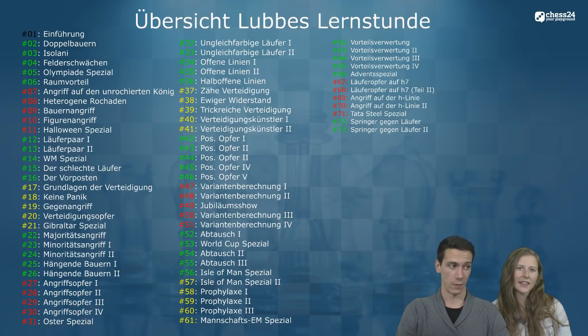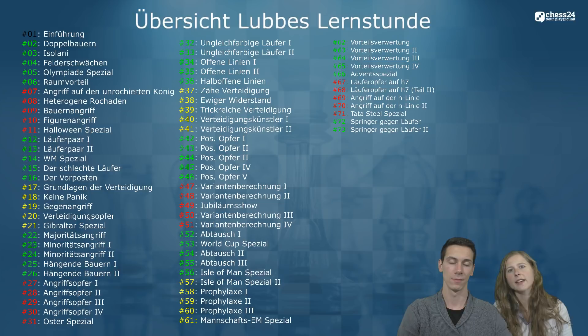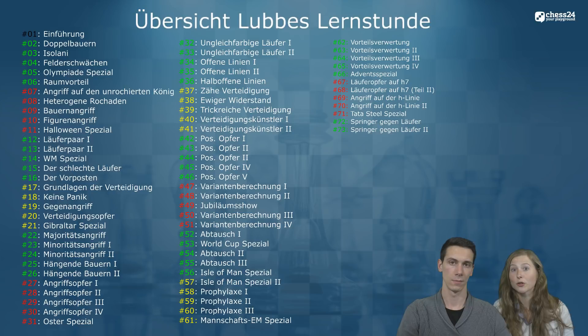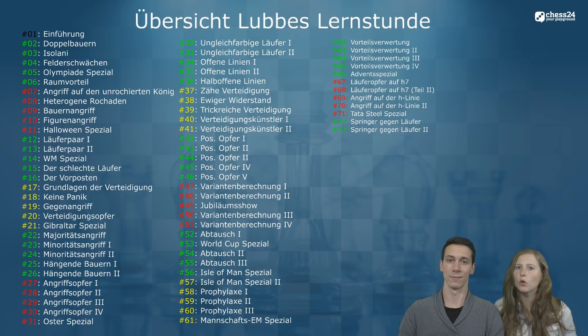Hallo zusammen, willkommen bei der 73. Lernstunde, heute mit dem Thema Springer gegen Läufer 2. Das kennen wir schon vom letzten Mal, da haben wir uns auch schon mit dem Thema beschäftigt. Letzte Woche haben wir gezeigt, dass es nicht immer so sein muss, dass eine Partei im Vorteil ist - also entweder der Springer den Läufer dominiert oder der Läufer den Springer - sondern dass es auch Stellungen gibt, wo sich das ungefähr die Waage hält.